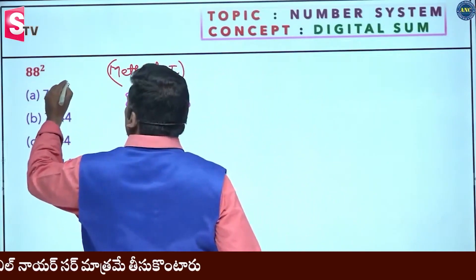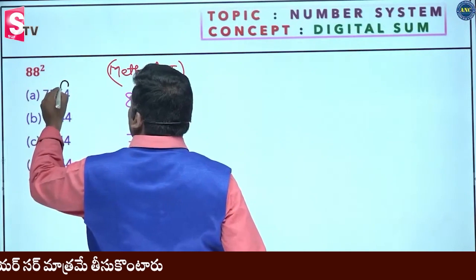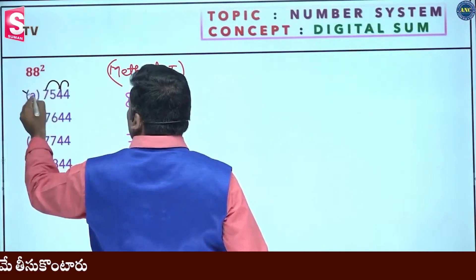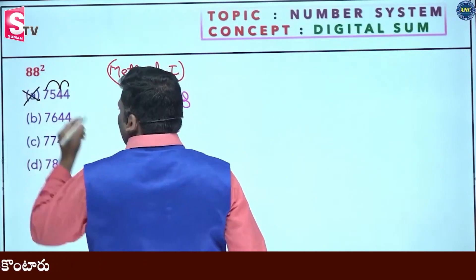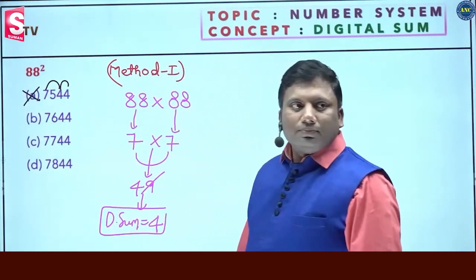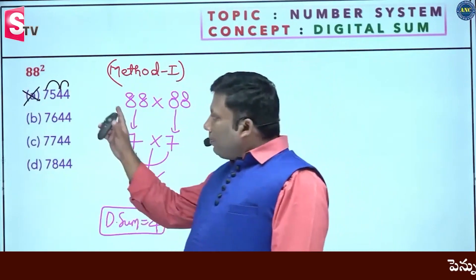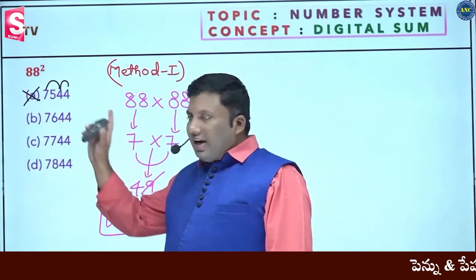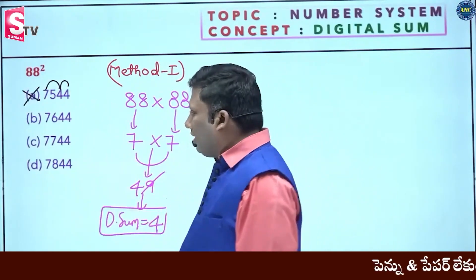4 plus 4 is 8, 8 plus 12 is 20. The digital sum of 20 is 2 plus 0 equals 2, then 2 plus... confirming digital sum of 4.